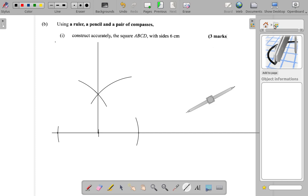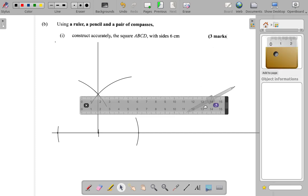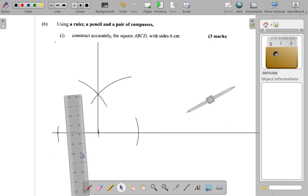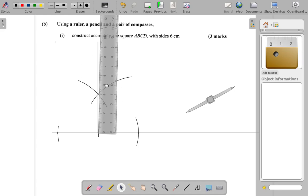They say the side must be 6. Let me get my ruler and measure 6 cm. 6 cm up. So I have 6 cm. Okay, good.